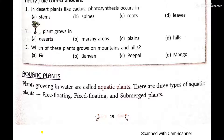Dear children, aquatic plants are the plants which grow in water. Since 'aqua' means water, plants which grow in water are known as aquatic plants. There are three types of aquatic plants: free floating, fixed floating, and submerged plants.